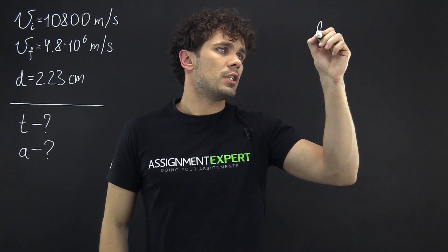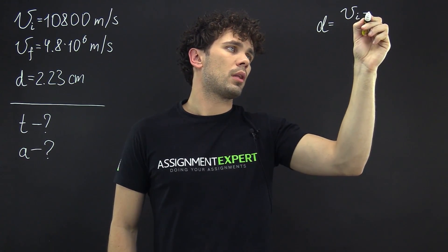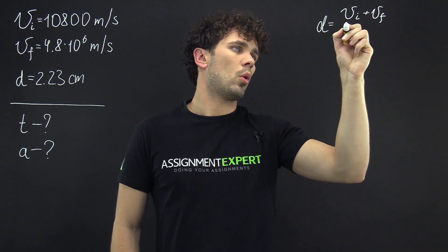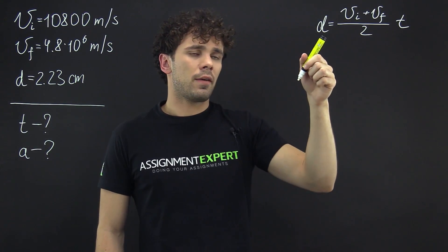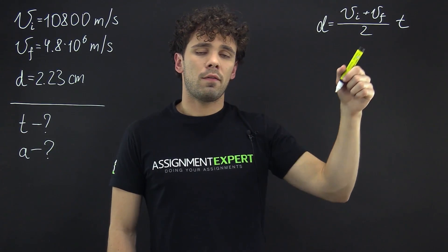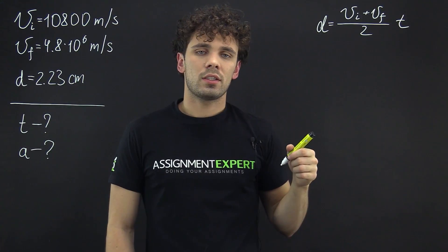The equation is d equals vi plus vf over 2 times t. Here we have d which is the distance, vi and vf are the initial and the final speed of the electron and t is the time.